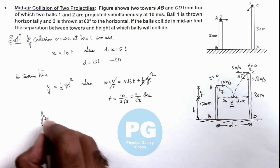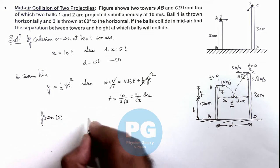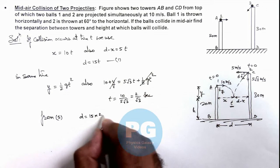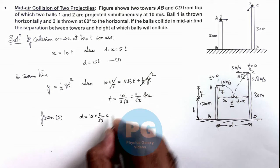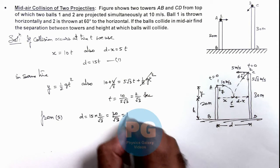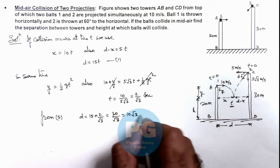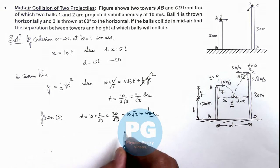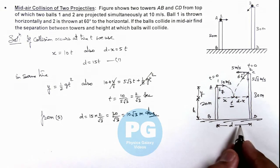From equation 1, d equals 15t, and time we can write as 2 by root 3. So this is 30 by root 3, or we can write this as 10 root 3 meters, which is the answer for the separation between the two towers.